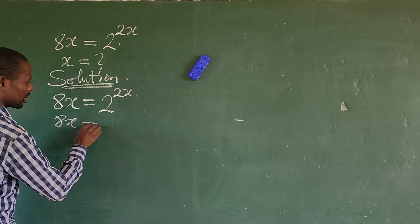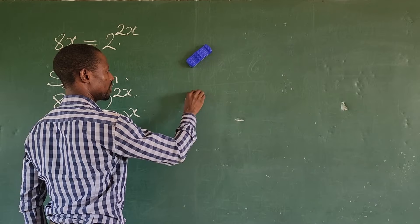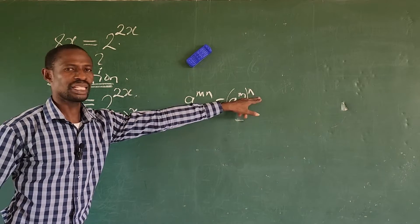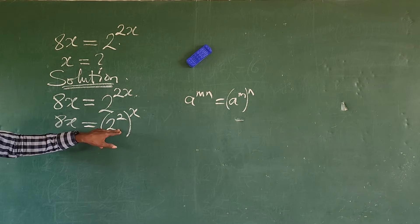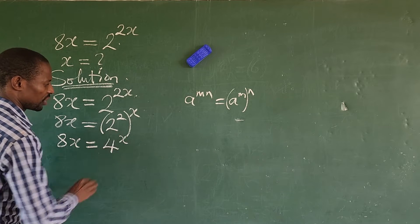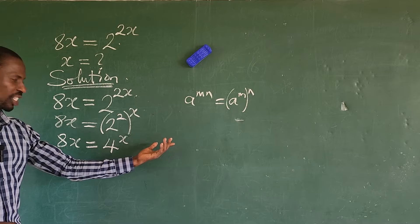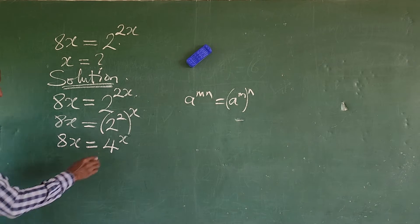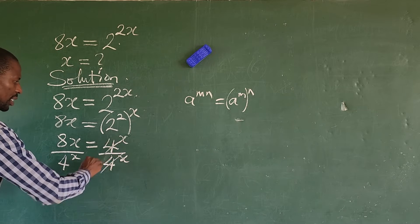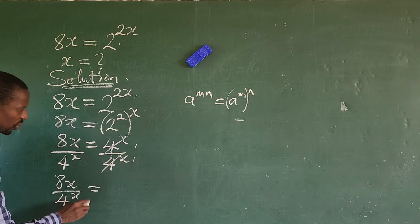I can rewrite this as 8x equal to 2 to the power of 2, in brackets, to the power of x. Remember the law which says that a to the power of m·n equals a to the power of m, all raised to the power of n — separating the two exponents. So I decided to separate the 2 from the x. Now, 2 to the power of 2 will give us 4, so we now have 8x equal to 4 to the power of x. From here, I want to make the left-hand side of the expression unity — I want to divide through by 4 to the power of x. So we are now left with 8x over 4 to the power of x, equal to 1.